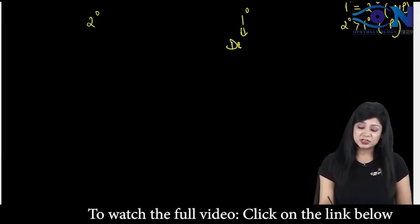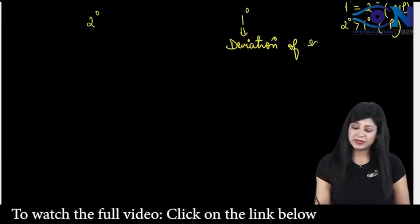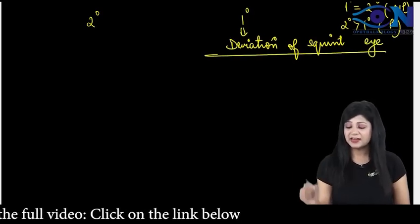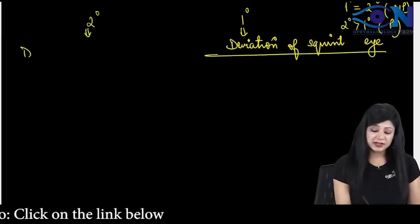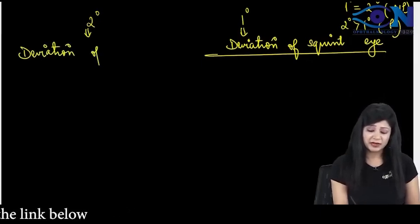Primary means it is a deviation of the eye, deviation of the squint eye. So whatever is the amount of squint present in the eye, that is called as the primary deviation.